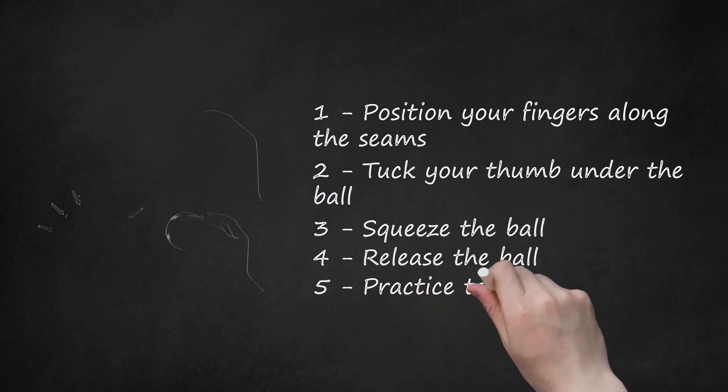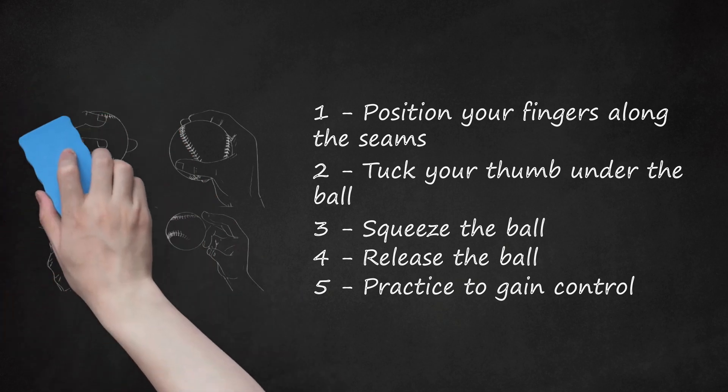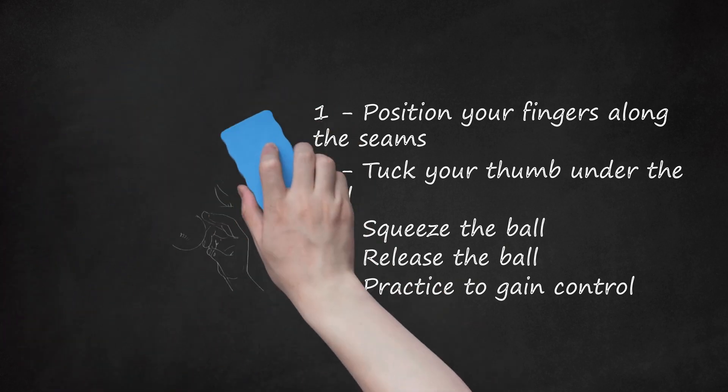Step 5: Practice to gain control. The sinker pitch is a little more difficult to control than the 4-seam fastball. Releasing from a 2-seam grip gives the ball more movement than it would otherwise have. The grip is also a little looser than a standard fast pitch grip. For this reason, it's important to practice the sinker pitch until you understand the nuances of the pitch before you use it during a game.